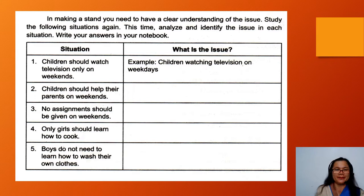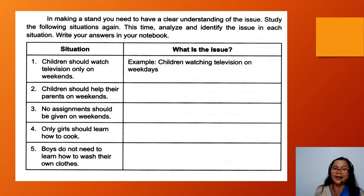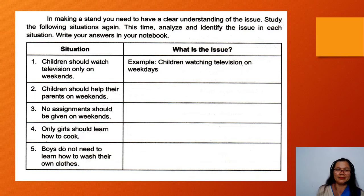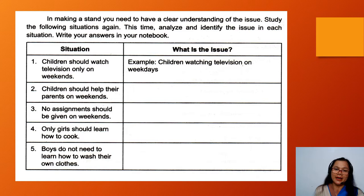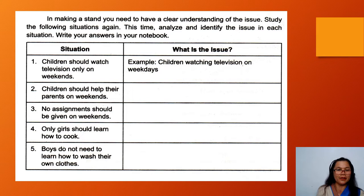Situation 1: Children should watch television only on weekends. What is the issue? Children watching television on weekdays. Number 2: Children should help their parents on weekends. What is the issue? Children helping their parents on weekends. Number 3: No assignments should be given on weekends. What is the issue? Giving of assignments on weekends. Number 4: Only girls should learn how to cook. What is the issue? Learning to cook is for girls only. Number 5: Boys do not need to learn how to wash their own clothes. What is the issue? Boys washing their own clothes.